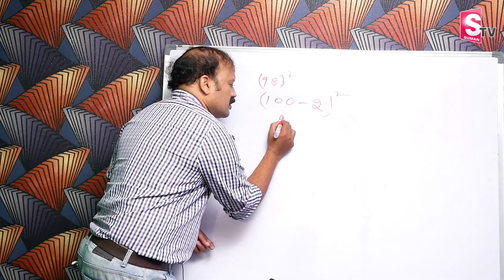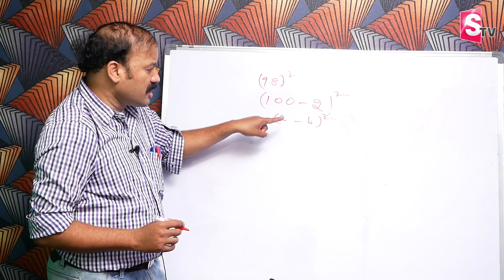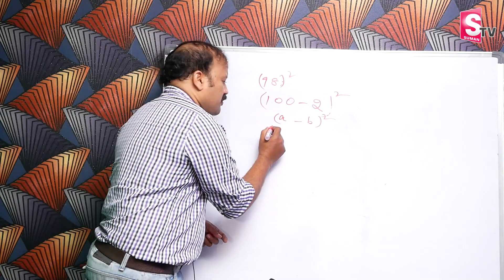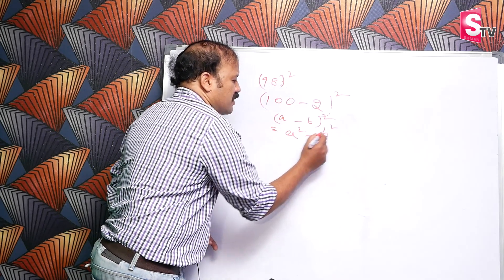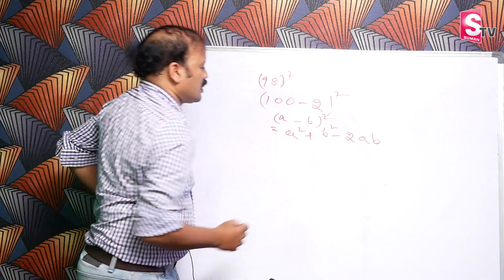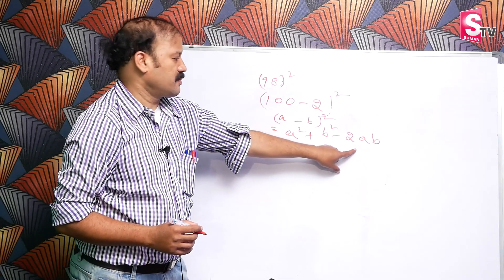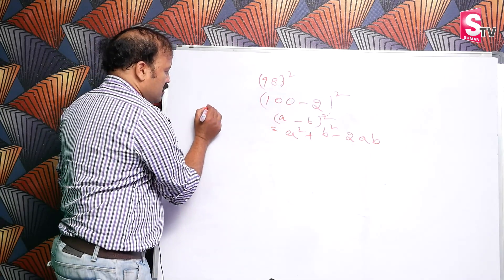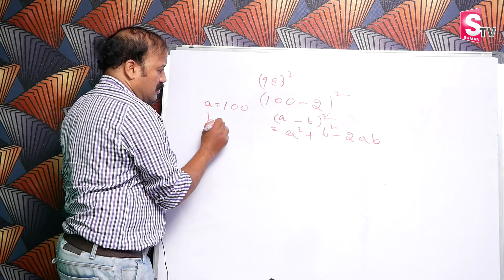It is in the form of a minus b whole square formula. The formula is a square plus b square minus 2ab. What is the value here? a equals 100, b equals 2.